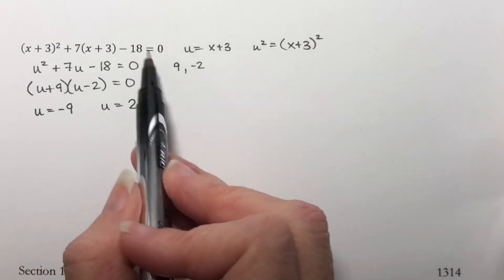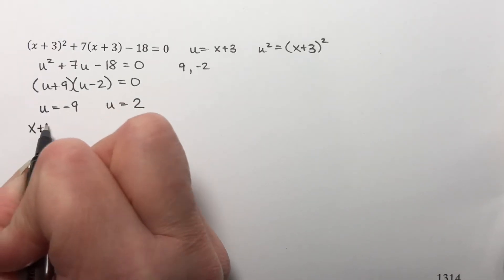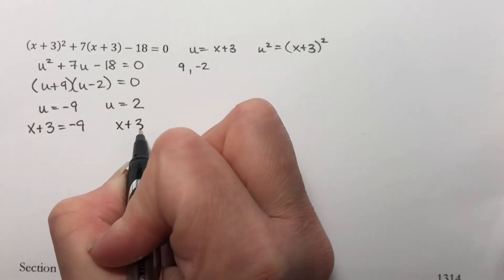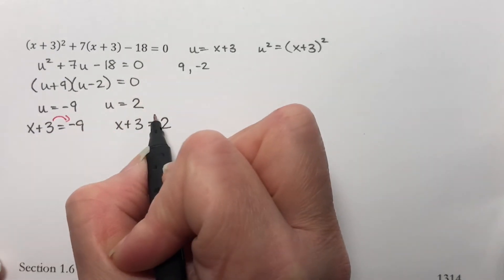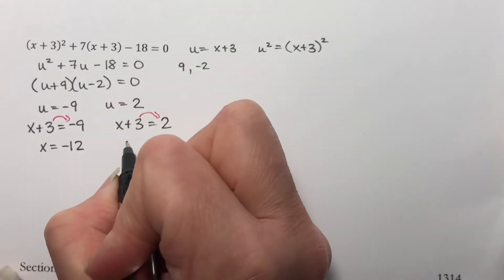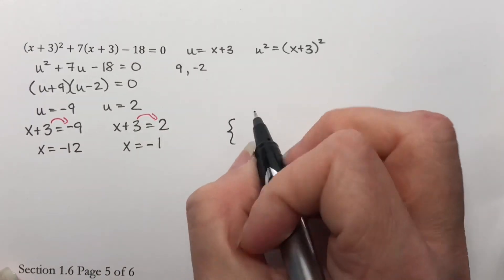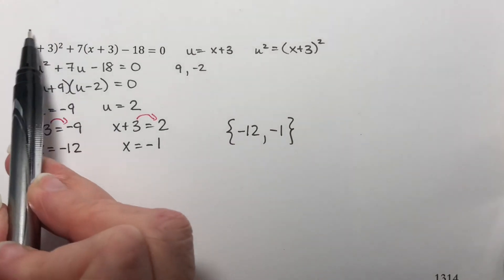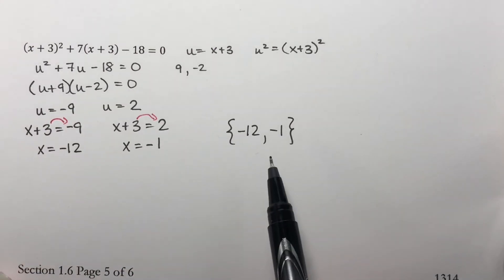I need to undo the substitution by plugging x plus 3 back in for u. So either x plus 3 equals negative 9, or x plus 3 equals positive 2. Subtracting 3 from each side, I get x equals negative 12 or x equals negative 1. Those are the two solutions, which makes sense since the largest exponent in the expanded form is x squared.